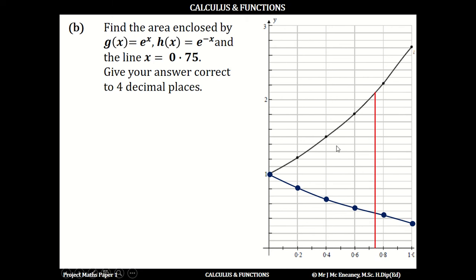What we're looking for is this area here—the area bounded between g(x), h(x), and the line x = 0.75. Now g(x) is the function on top, and h(x) is the function on the bottom.